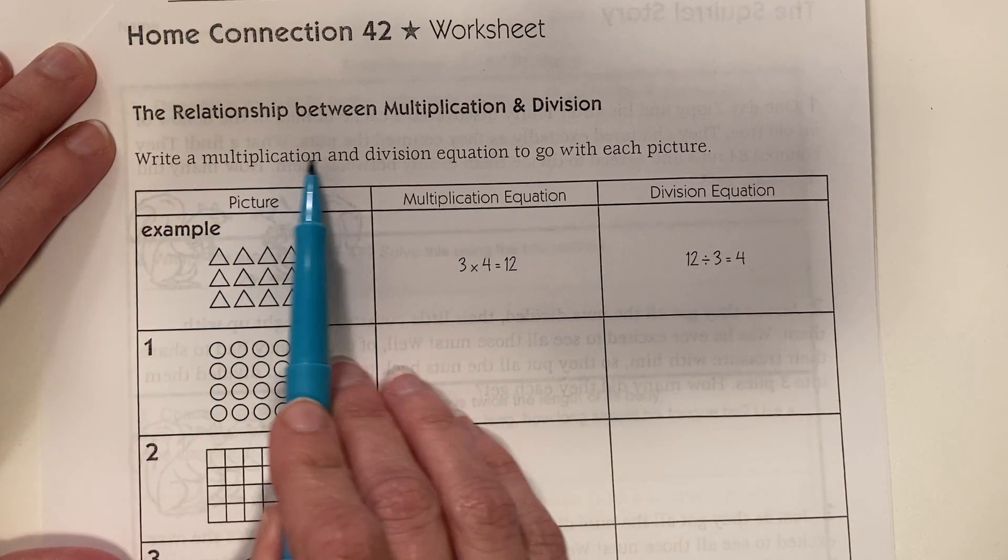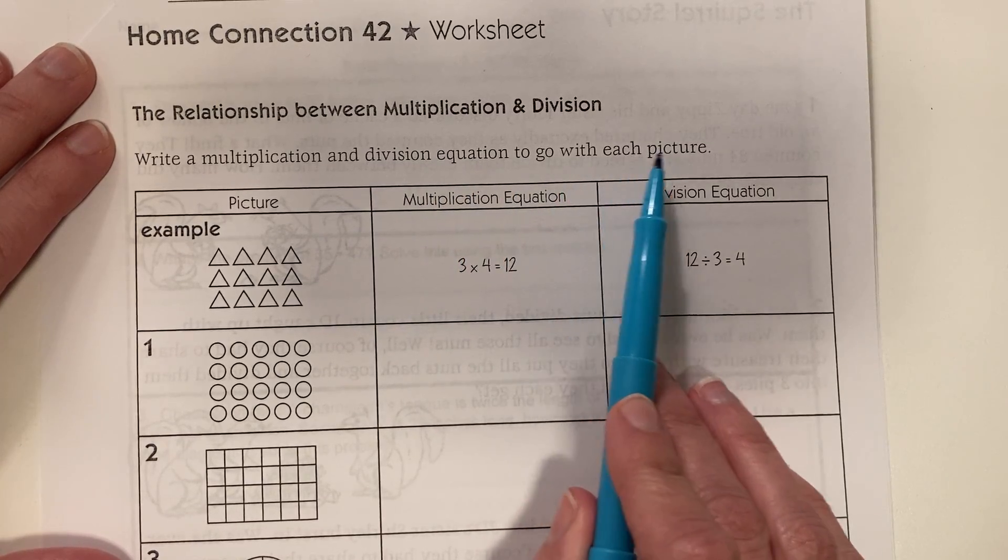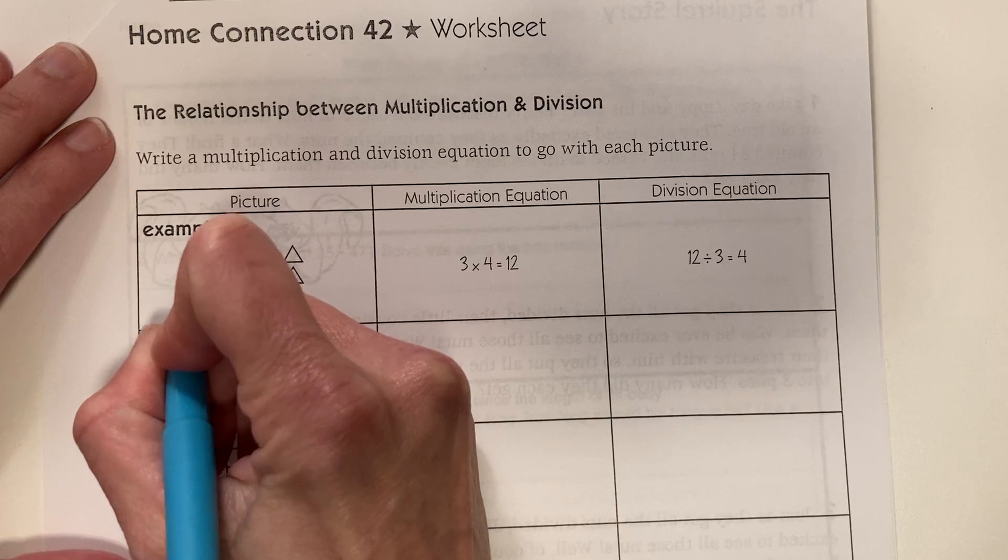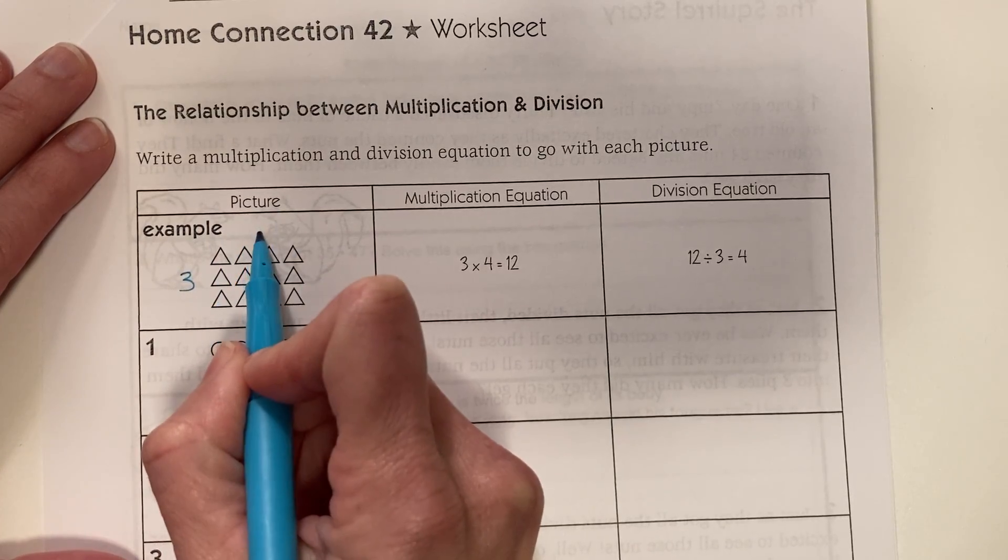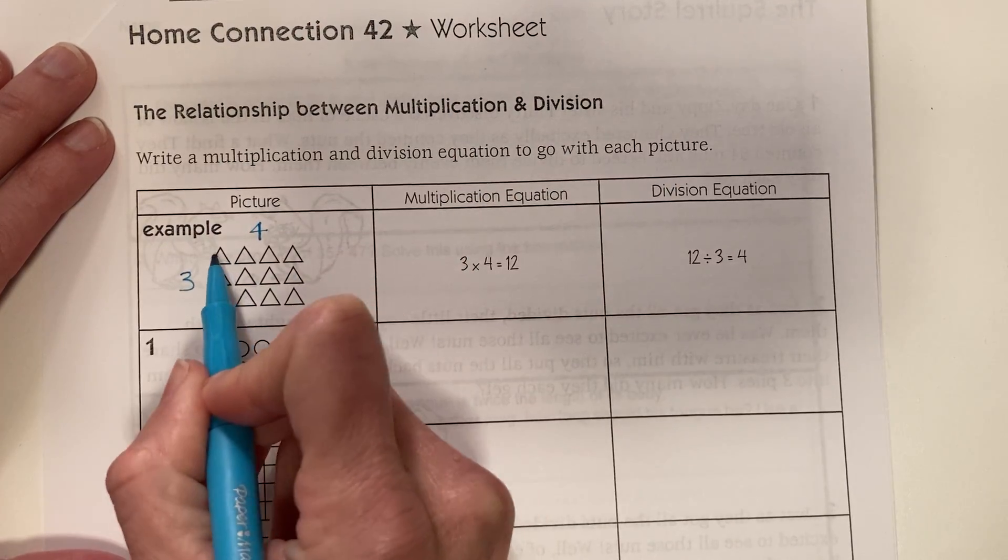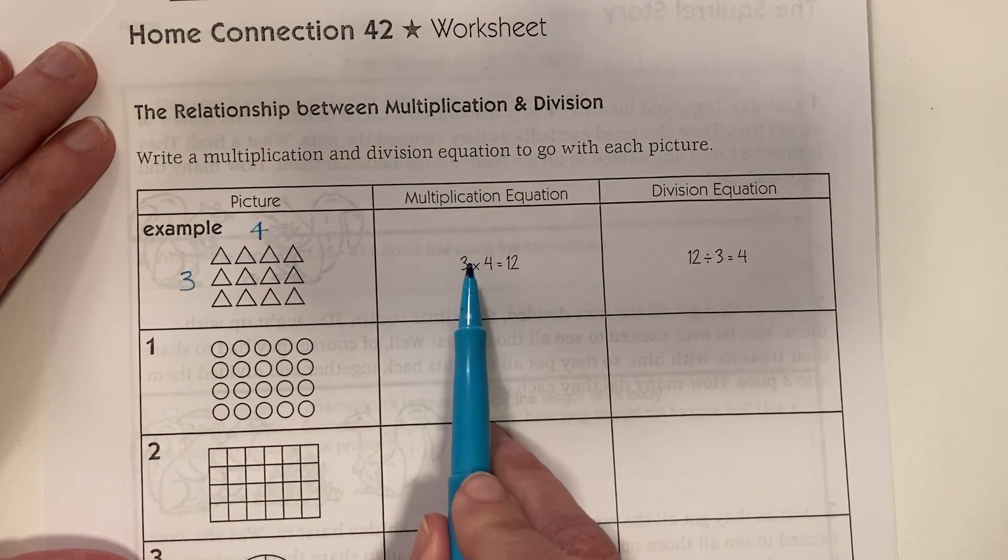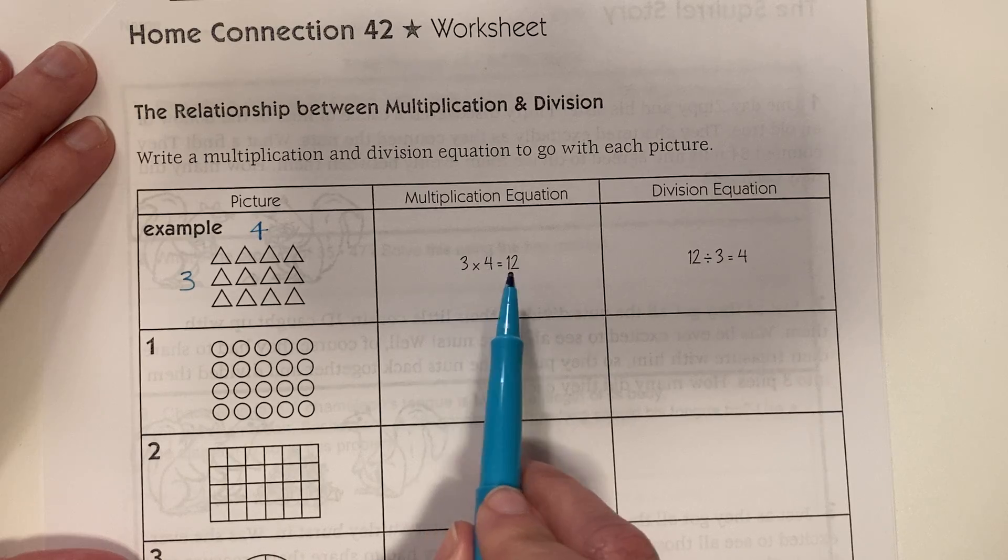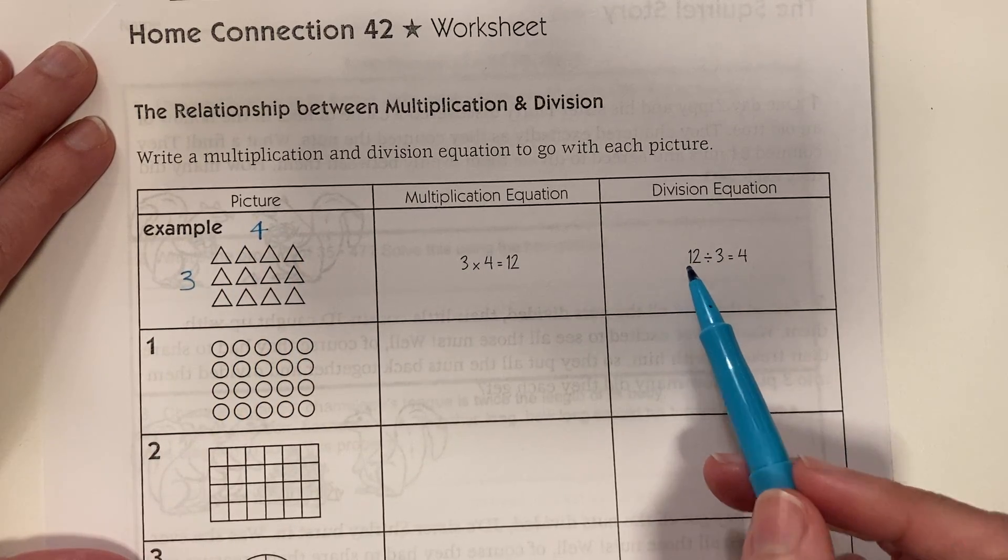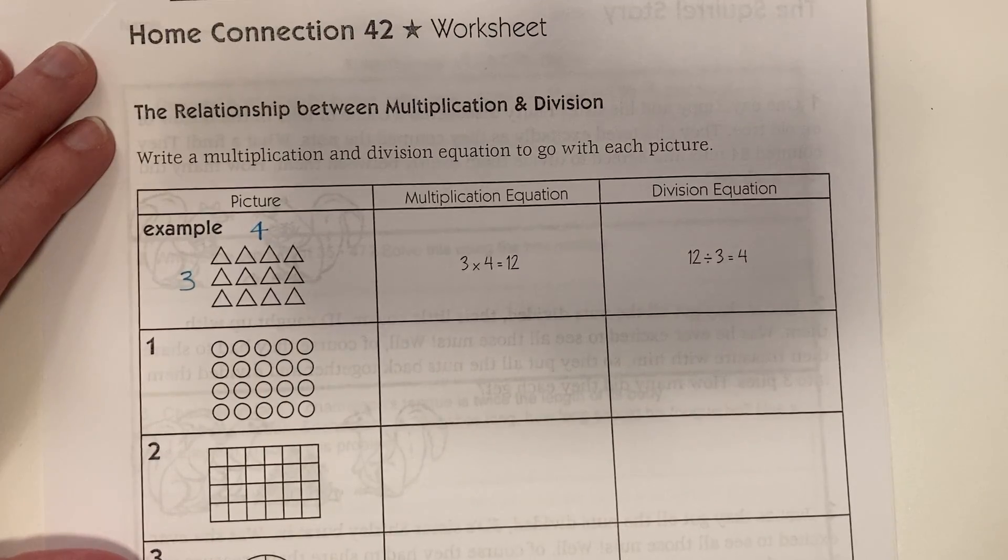Write a multiplication and division equation to go with each picture. So in this example we've got a 3 by 4 array, 3 triangles by 4 triangles. So the multiplication equation is 3 times 4 equals 12 triangles and the division equation is 12 divided by 3 equals 4.